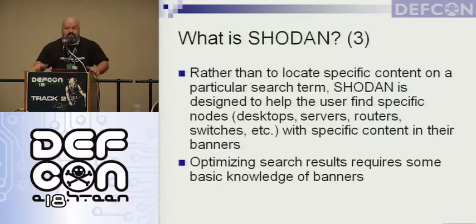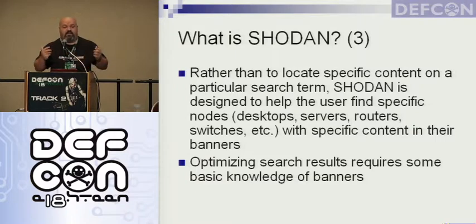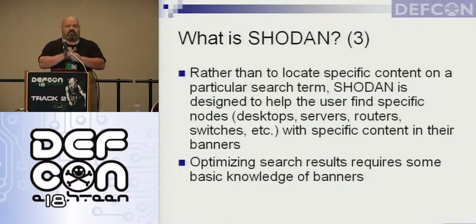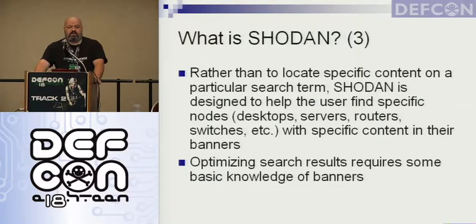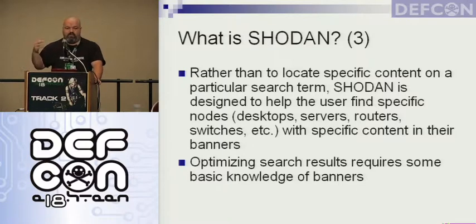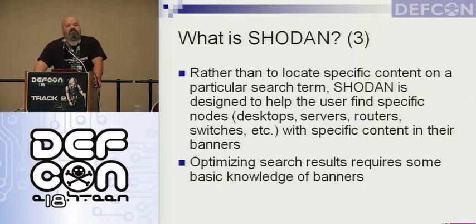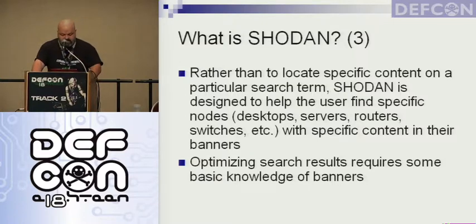Instead of looking for specific content on a page, we're looking for specific information about the device — is it a desktop, a server, a router, a switch, or a printer? We can find that out by looking at the content in the banner. Typically these are on port 80, but they could also be banners on port 21, 22, 23, or others we'll talk about. Optimizing search results for Shodan requires some knowledge of what a banner looks like, so we'll cover that as well.